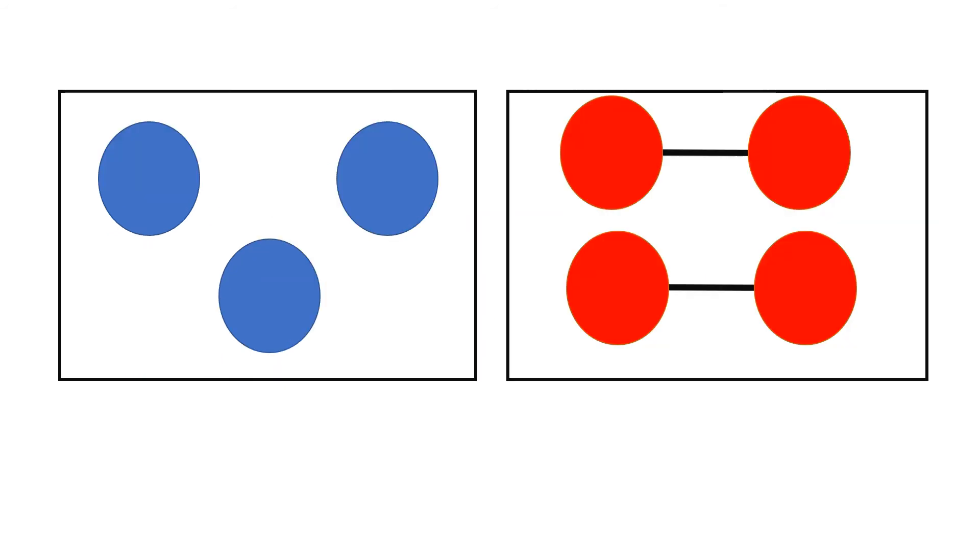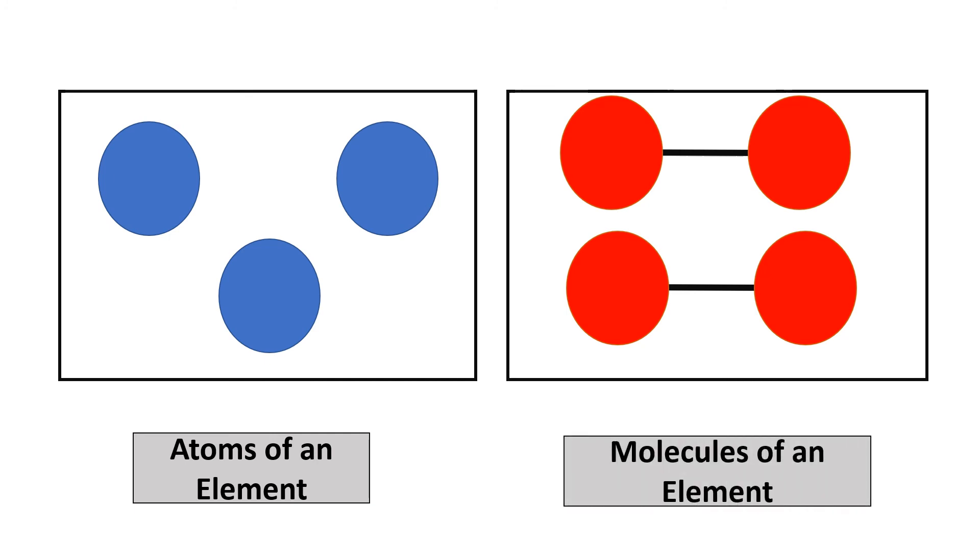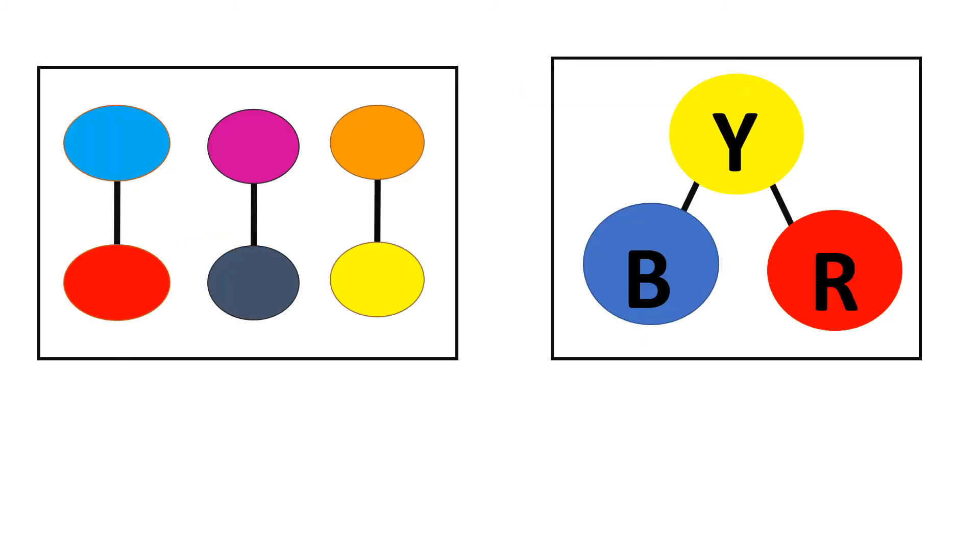Let's discuss the answer one by one. We have here two boxes, which contains atoms of different elements. The first box contains atoms of blue element, and the second box contains atoms of red element. The first box is called atoms of an element. While the second box also has atoms of an element. However, since the atoms are attached to one another, they are called molecules of an element.